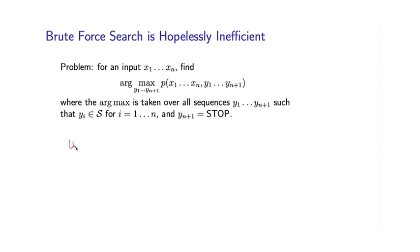Say again we have the dog laughs as the input. So that is x1 through xn in this case. And let's say that s, the set of possible part of speech tags, is of size just three. So we have d, n, and v for example. Then I can list all possible tag sequences. So here it goes. We have d, d, d stop.